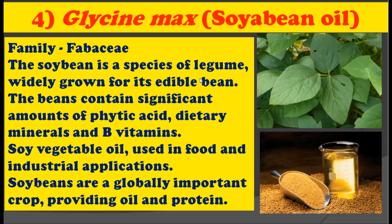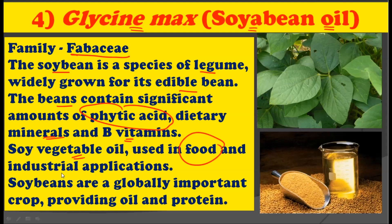The fourth plant is Glycine max, famously called soybean, and the oil from this plant is called soybean oil. This plant belongs to the family Fabaceae. The soybean is a species of legume, widely grown for its edible bean. This bean contains a significant amount of phytic acid, dietary minerals, and vitamin B. Soybean vegetable oil is used for the preparation of food and has many industrial applications as well. Soybeans are globally important crops for providing oil and protein.